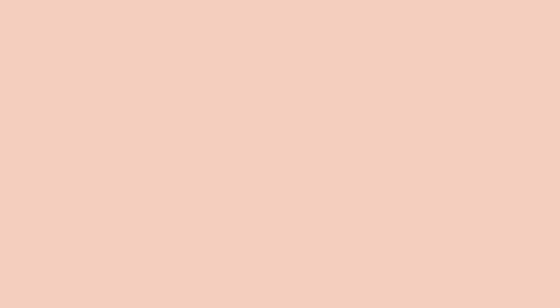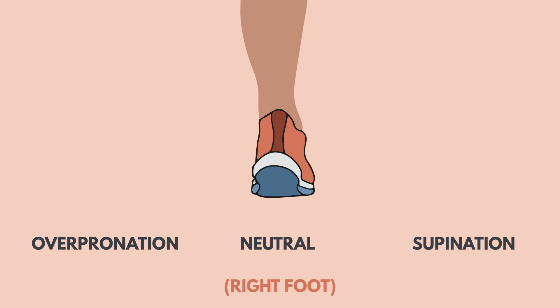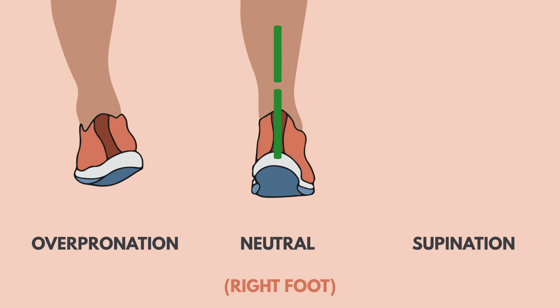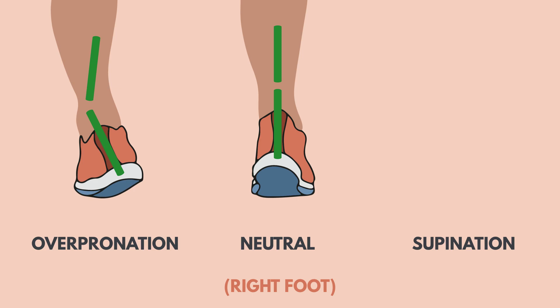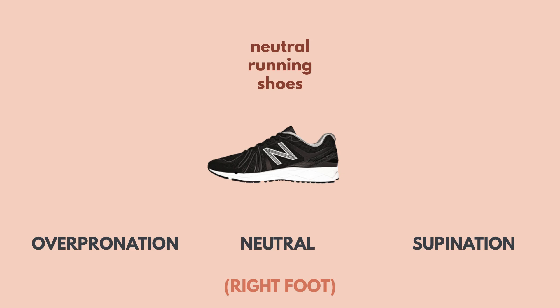A neutral stride can be identified by minimal rolling inwards at the ankle joints upon landing on the ground. Overpronation can be identified by abduction and eversion — or simply put, rolling inwards of the ankle upon landing on the ground. Conversely, supination occurs when there is adduction and inversion, or rolling outwards of the ankle. Runners or walkers with a neutral or supinating stride will often be recommended what is called a neutral running shoe, while runners who overpronate will be recommended stability running shoes.